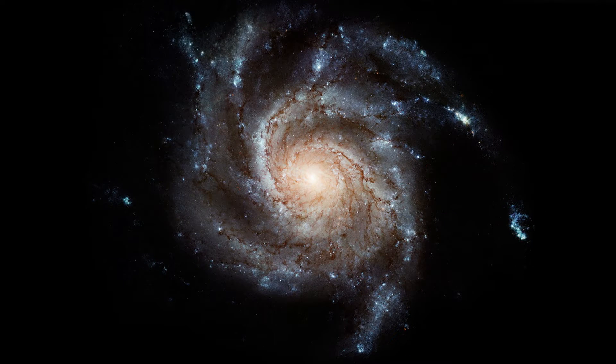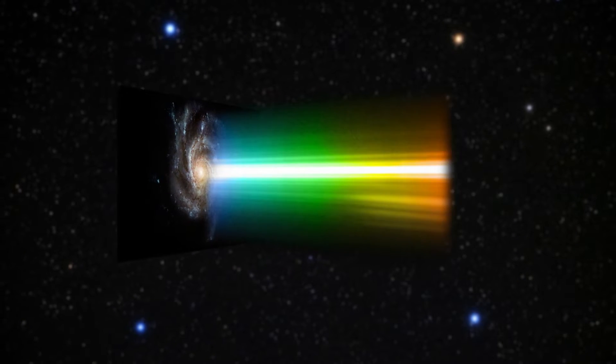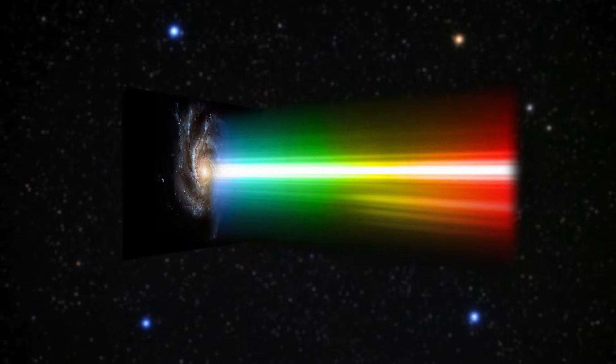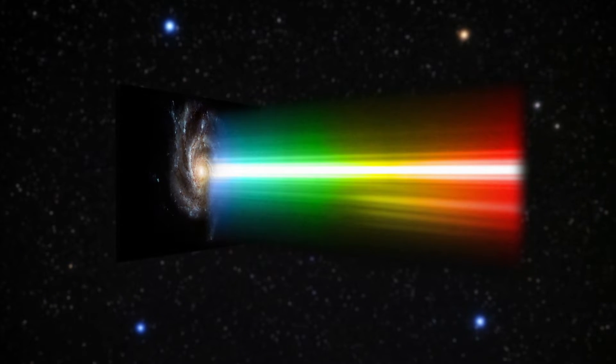Once the light enters the spectrograph, it is split by a dispersive optical element into its different components, or wavelengths, in order to be studied. This element acts much like rain droplets that disperse the light to form a rainbow.